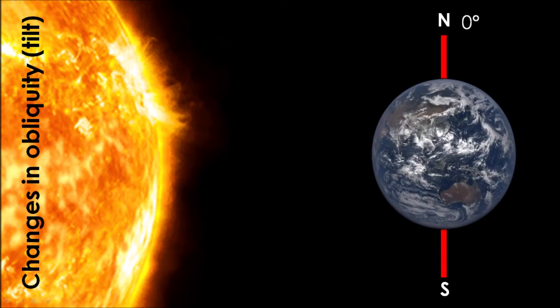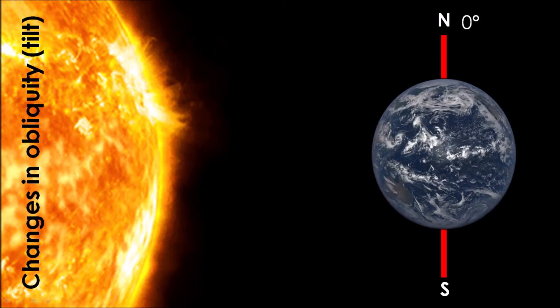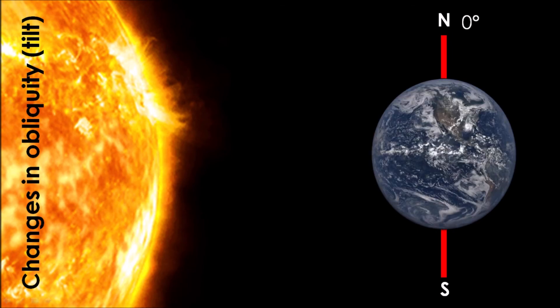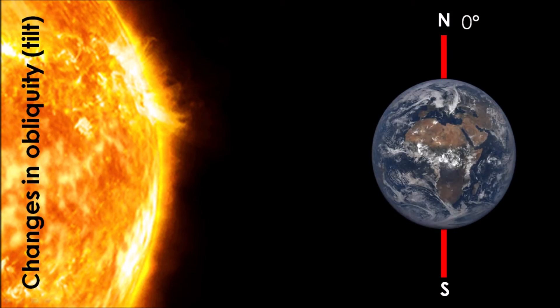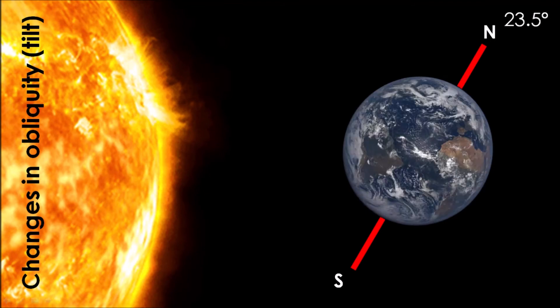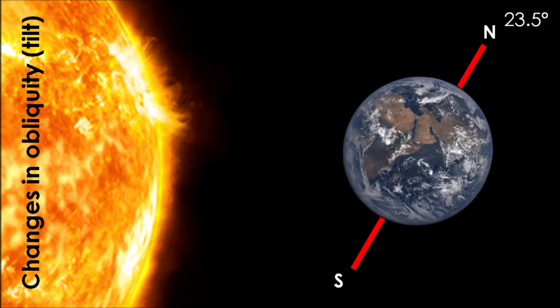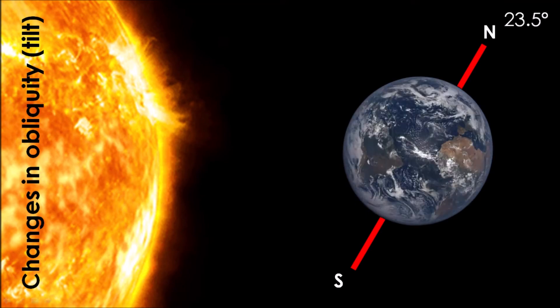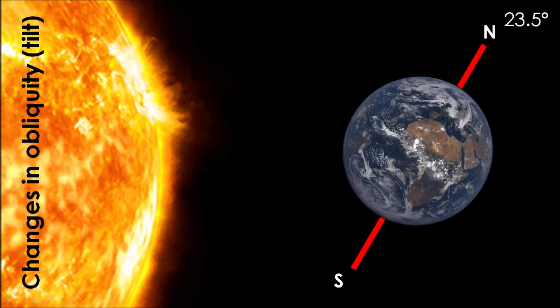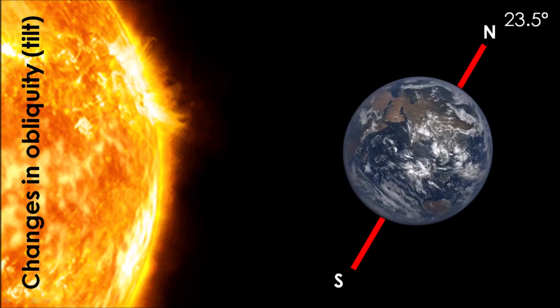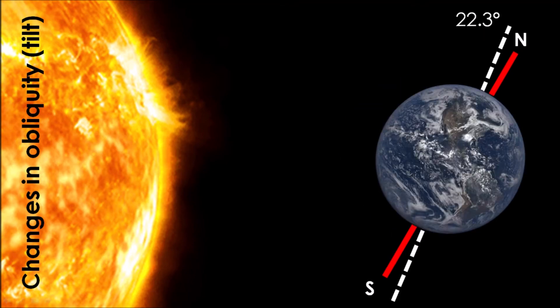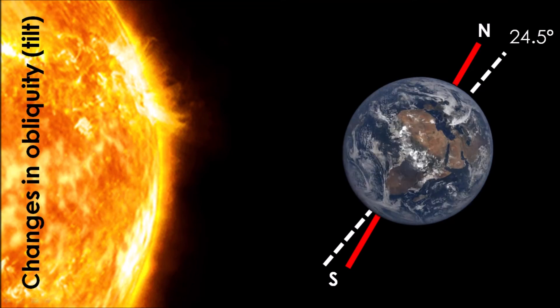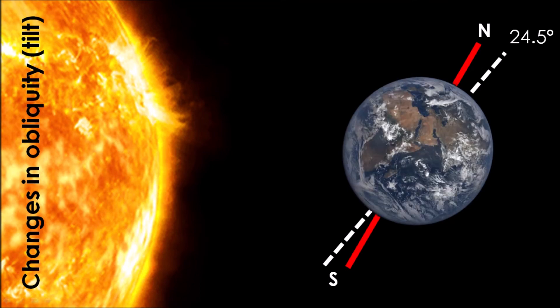The next concept in Milankovitch theory is known as obliquity, and this refers to the angle of the Earth's axis. You should be aware that the Earth actually tilts on an axis of about 23 degrees. And this is the reason why the Earth has seasons. Over the last million years, our tilt angle has actually varied between 22 degrees and 24 degrees, perpendicular to the Earth's orbital plane.